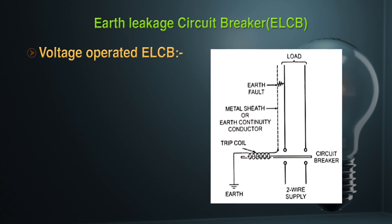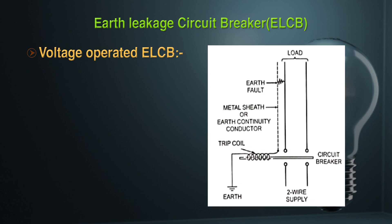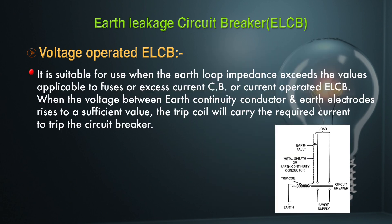The voltage operated ELCB is suitable for use when earth loop impedance exceeds the value applicable to fuses, excess current circuit breakers, or current operated ELCBs. When the voltage between the earth continuity conductor and earth electrode rises sufficiently, the trip coil carries the required current and trips the circuit.